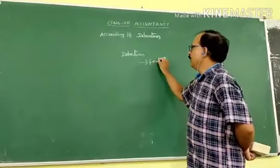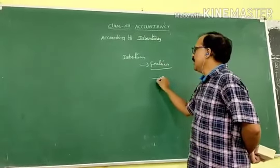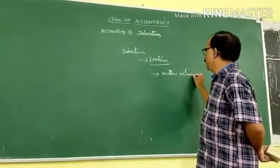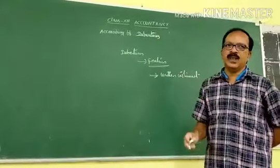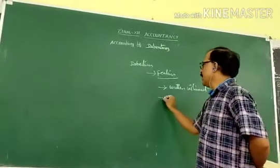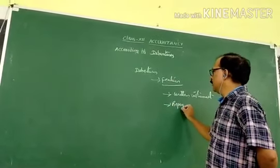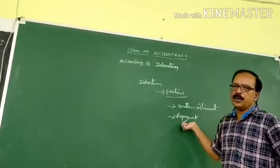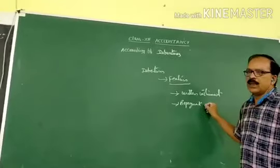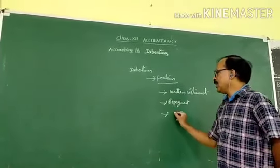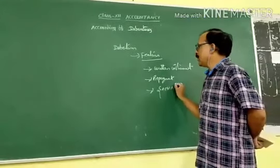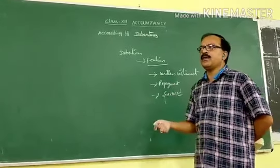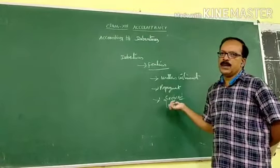These are the features of a debenture. First, it is a written instrument issued by the company. Second, repayment schedule — after completion of how many years the company wants to repay the amount to the debenture holder, whether it is 10 years, 20 years, or 30 years. Third, it is secure. Generally, all debentures are secure. Among all types of debentures, the best debentures are secured.